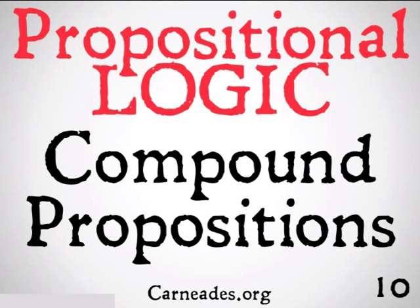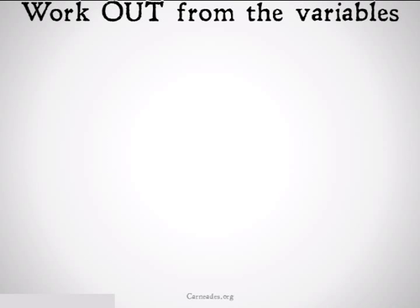Compound propositions are where we're going to be combining two or more of the operations we just learned about and figuring out how we can create a big old truth table for those more complicated propositions. Let's take a look at the truth tables. The key in these is to work out from the variables. You start with the variables, the letters, the P's, the Q's, the R's, the S's, and you work out from them.